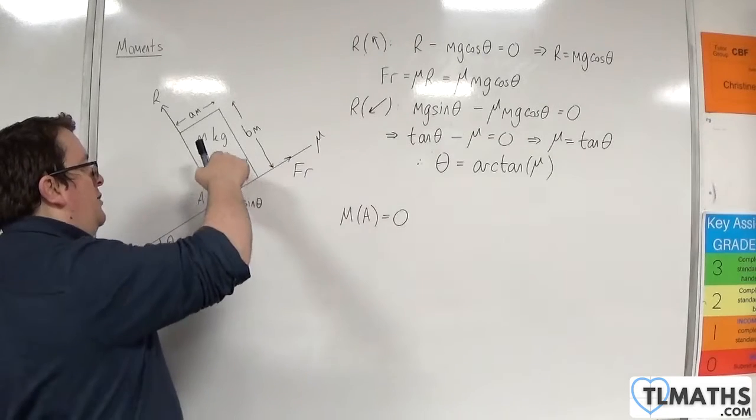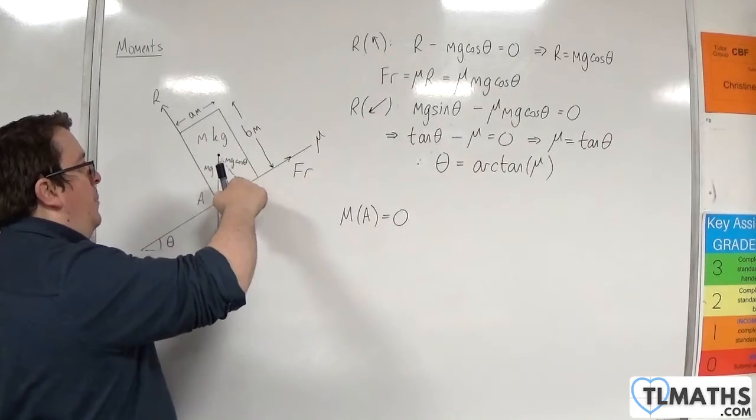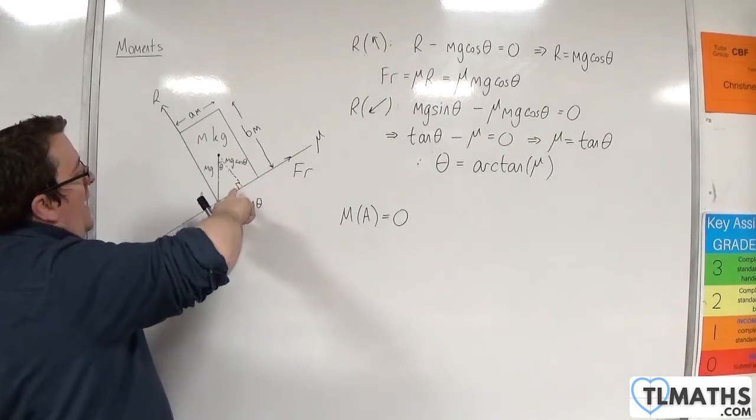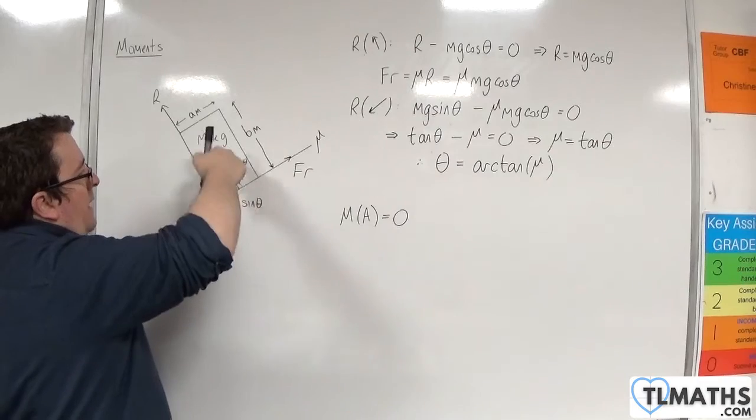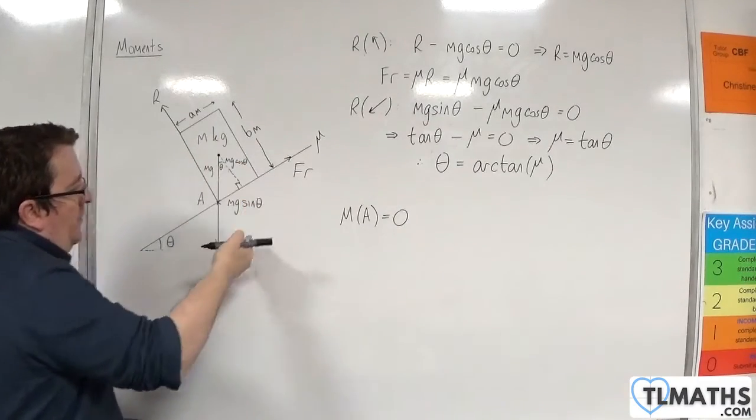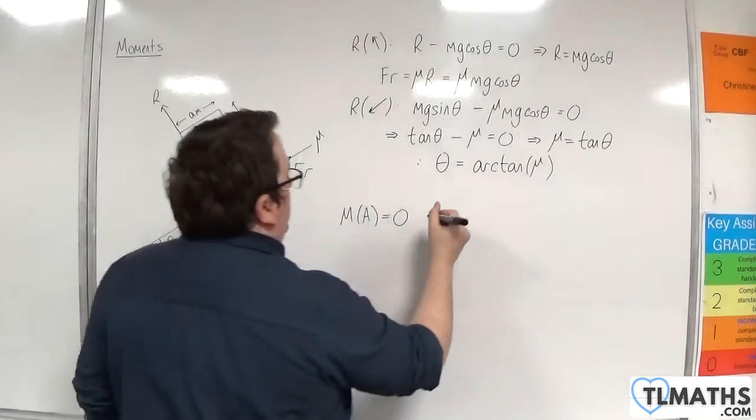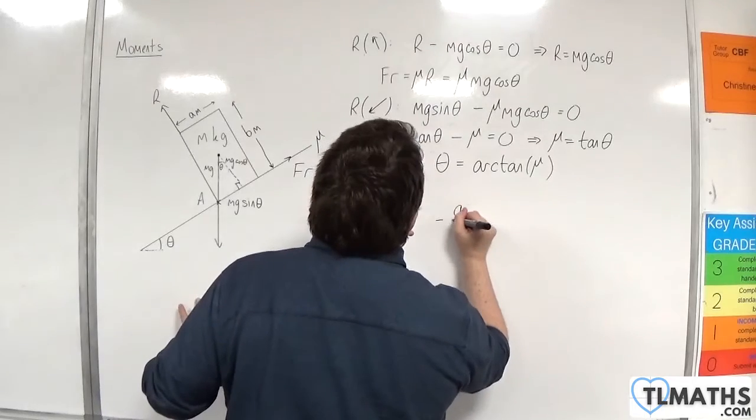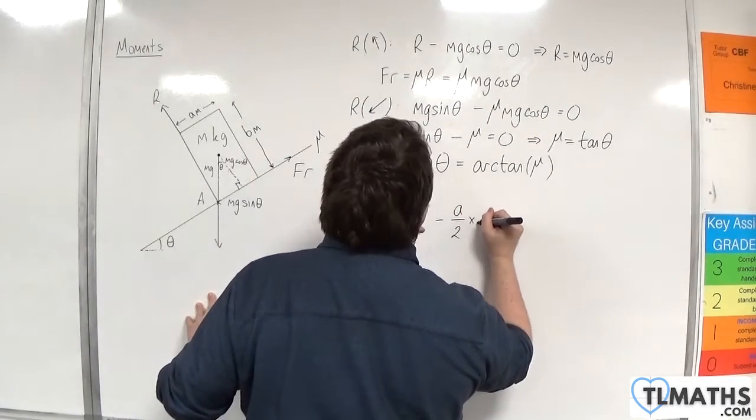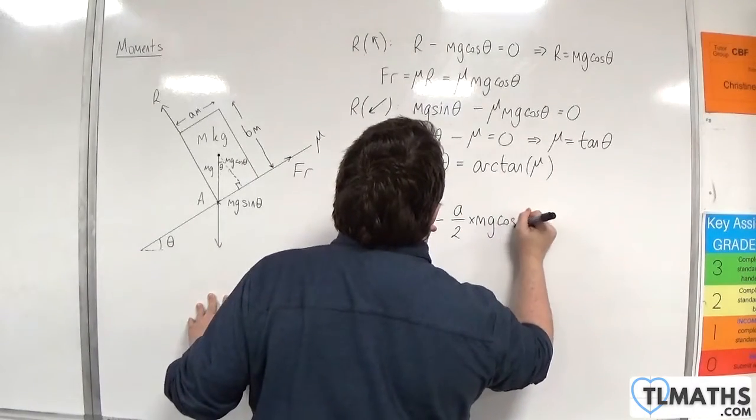This is your mg sine theta, and that is your mg cosine theta. Then first of all, let's look at the mg cosine theta, that component of the weight. We are A over 2 away from it, and it's going to be going around in a clockwise motion, so we're going to have minus A over 2 times mg cosine theta.